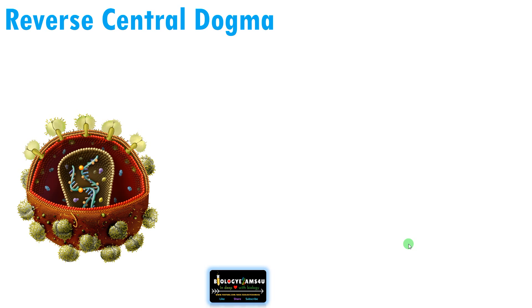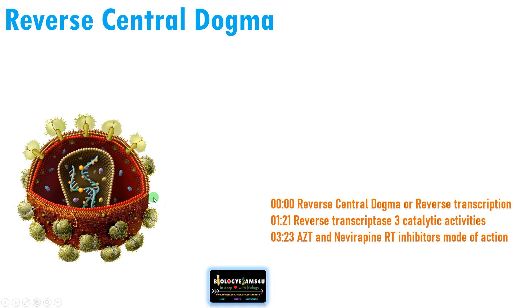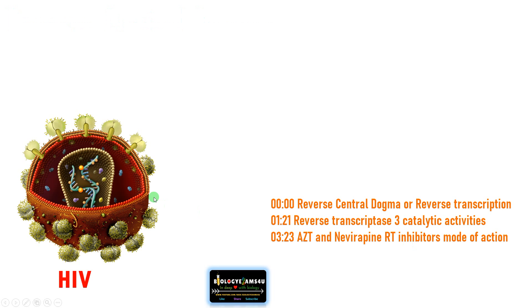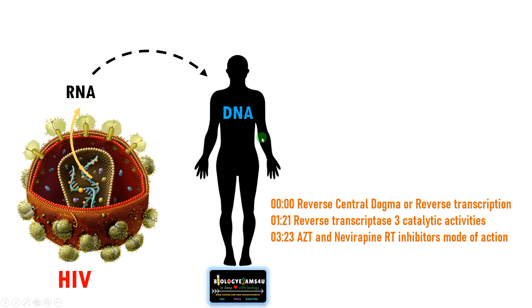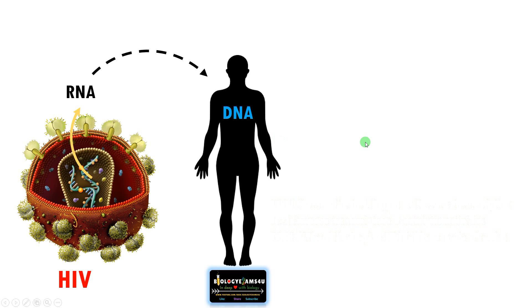Let us understand reverse central dogma with a simple example. This is the HIV virus. The genome is RNA. How does this virus, with a genome of RNA, infect humans who have a genome of DNA? The genome of the virus should integrate into the host genome in order to replicate. How does this happen?